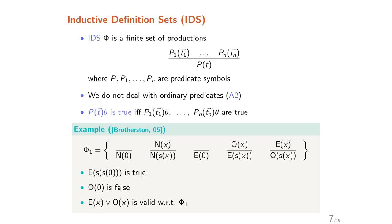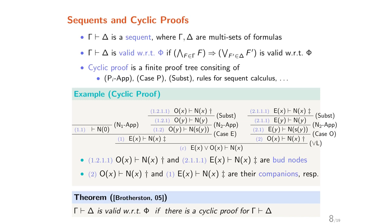About inductive definition sets: phi is a finite set of productions of a given form, where P1 to Pn are predicate symbols. As we have assumed assumption A2, we don't deal with ordinary predicates now. Pt*theta is true if and only if P1(t1*theta) to Pn(tn*theta) are all true. For example, phi1 is an inductive definition set where ESS0 is true in phi, but O0 is false. And the formula EX or OX is valid with respect to phi1.